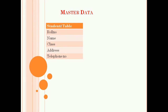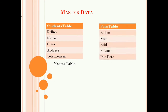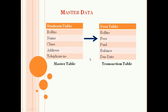The student table has fields: roll number, name, class, address, and sometimes phone number — this is the master table. The fees table has fields: roll number, fees paid, balance, and due date — this is the transaction table. The common field in both tables is the roll number, which serves as the primary key. Using this primary key, we can exchange any type of information between the two tables.